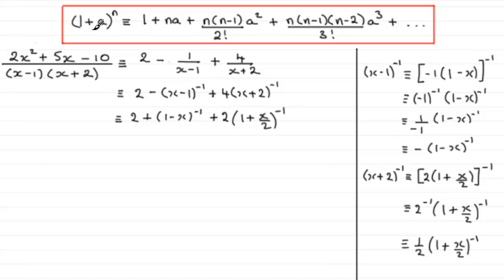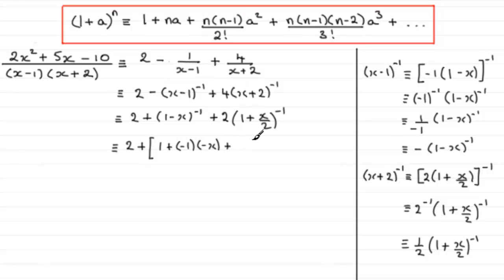Both terms are now in the correct form for binomial expansion. We have 2 plus the expansion of (1 minus x) to the minus 1. Here a equals minus x and n equals minus 1. So we get 1 plus (−1)(−x) plus (−1)(−2)/2! times (−x) squared, plus and so on.